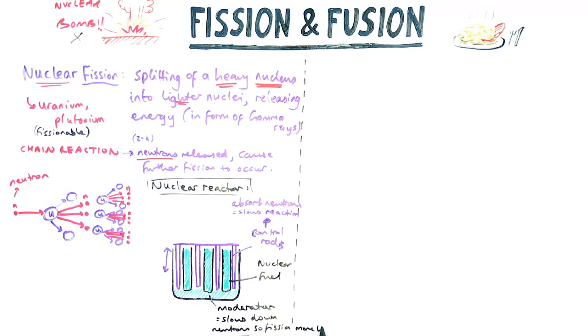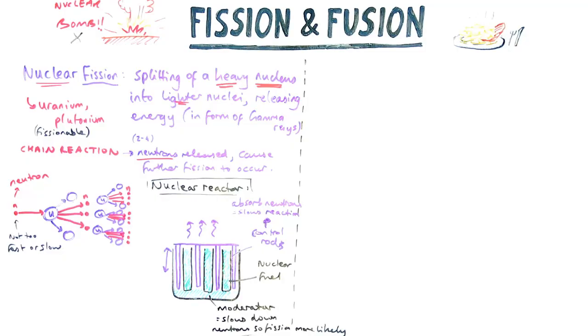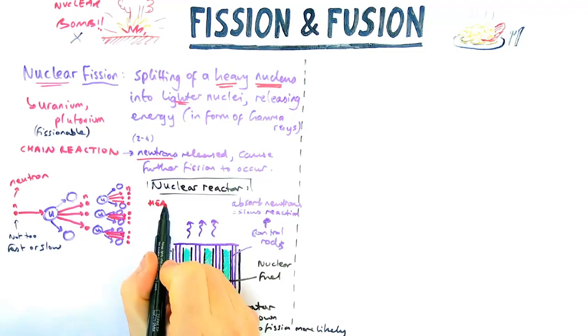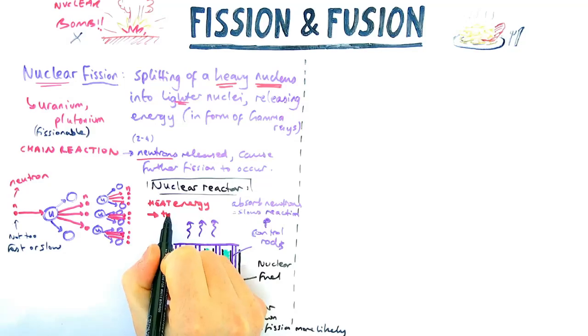You also have something called a moderator, which slows down neutrons, which sounds like a bad thing. But that actually means they're more likely to undergo fission with further uranium nuclei. So these neutrons are not too fast or slow, just the right speed so that fission can occur. Now, the whole point of the nuclear reactor is to release energy. How does that happen? It's as heat.